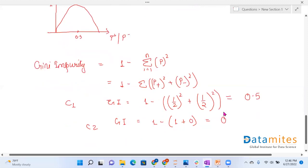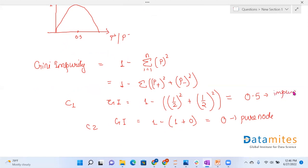If the Gini impurity is 0, that is a pure node. If the Gini impurity is 0.5, it is an impure node. The range of Gini is given by 0 to 0.5.